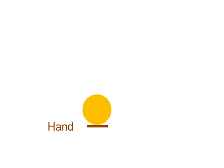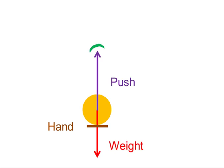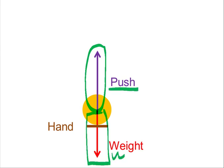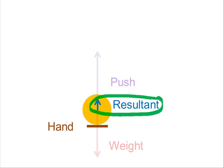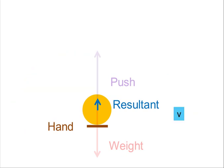Now let's look at a ball being pushed up by the hand, leaving the thrower's hand, moving up, and then moving down. While it's being pushed by the hand, it is not a projectile — it is not in free fall. Why not? Because there's another significant vertical force acting on it: the push of the hand. The resultant force is upward, and because of that resultant force upward, the hand is accelerating the ball upward. The ball is also moving upward, so it gets faster and faster.